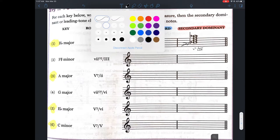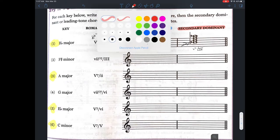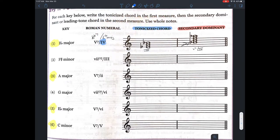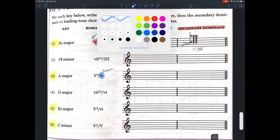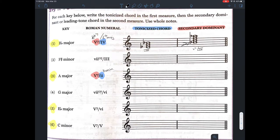So let's fill out the next one by ourselves. The tonicized chord is going to be a II, which in A major is B minor. And the V7 of B minor is going to be F sharp 7.